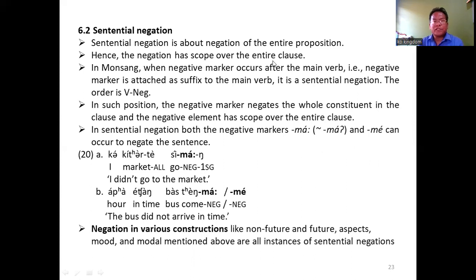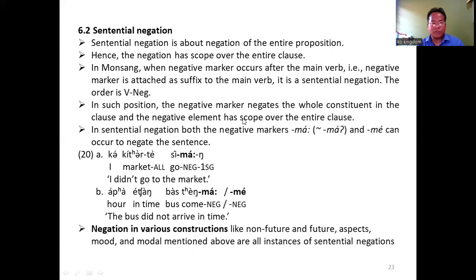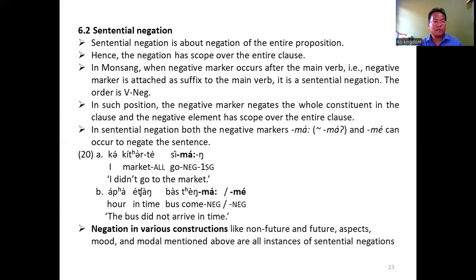This order, in which the negative word immediately follows the constituent that it is negating, shows that there is no ambiguity in the interpretation of the clause. Sentential negation is about the negation of the entire proposition; hence, negation has scope over the entire clause. In Monsang, when the negative marker occurs after the main verb as a suffix to the verb, it is an instance of sentential negation. In such position, the negative marker negates the whole proposition in the clause, and the negative element has scope over the entire clause. Both negative markers ma and me can occur to negate the sentence, as demonstrated in examples 20a and 20b.